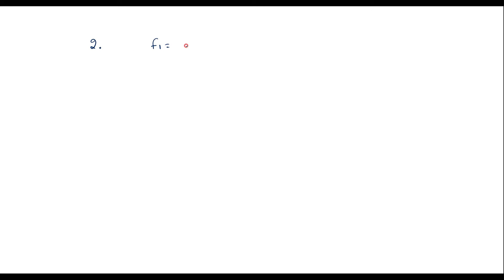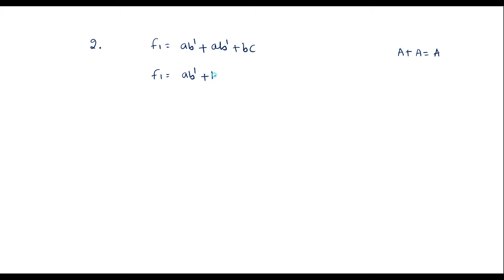Let me take the second example. F1 is equal to ab dash plus ab dash plus bc. Looking at this function, we can say it is having three variables: a, b, and c. By observing, ab dash appears two times. By Boolean laws, a plus a equals a, so the two ab dash terms can be replaced by one: F1 equals ab dash plus bc.